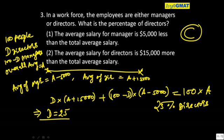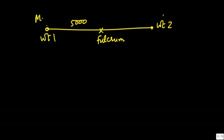Now this is a longer method to solve a question like this. There can be a 10 seconds approach to solving this problem. Let's see. Let's assume this is the fulcrum, and this is weight 1, and this is weight 2. Can you imagine a situation like this in this problem itself? There are managers on the left side, there are directors on the right side, and there will be an overall average. How much distance is this value? What is the difference of averages? If I say this is managers and this is directors, what is the difference here? 5000. And here it is 15000.